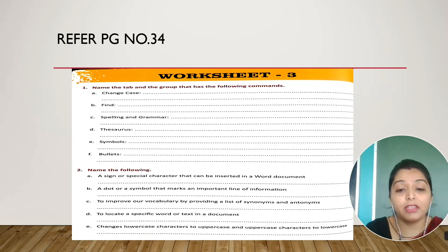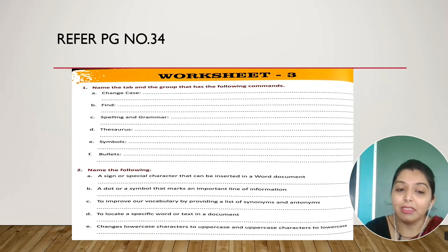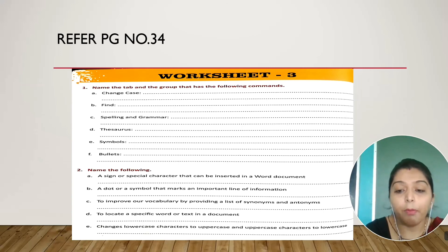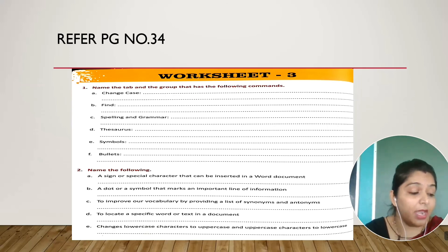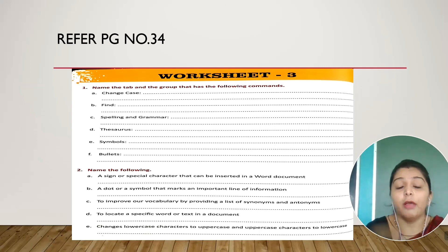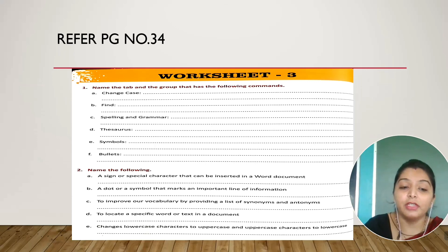Question 2: A sign or special character that can be inserted in a Word document — the answer is Symbols. Next: a dot or symbol that marks an important line of information — the answer is Bullets. Next: to improve our vocabulary by providing a list of synonyms and antonyms — the answer is Thesaurus. Next: to locate a specific word or text in a document — the answer is the Find command.